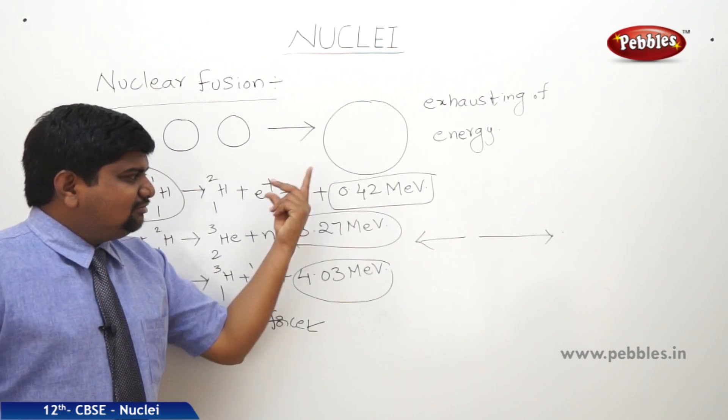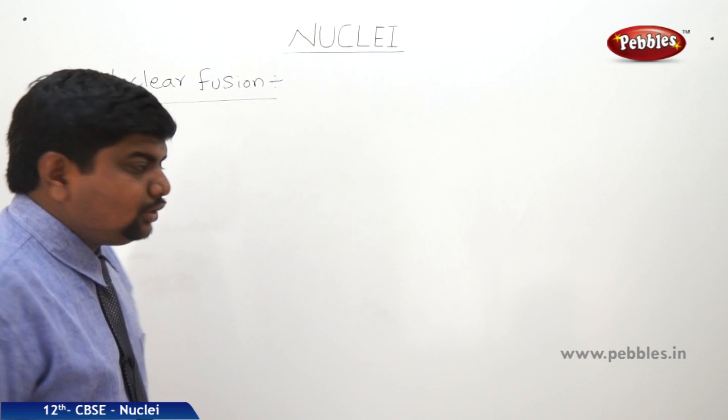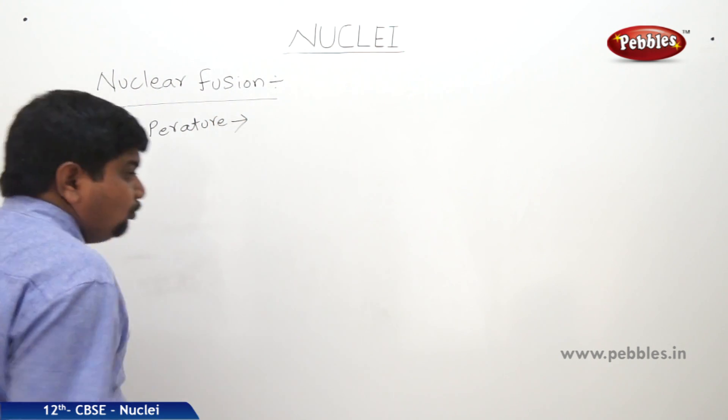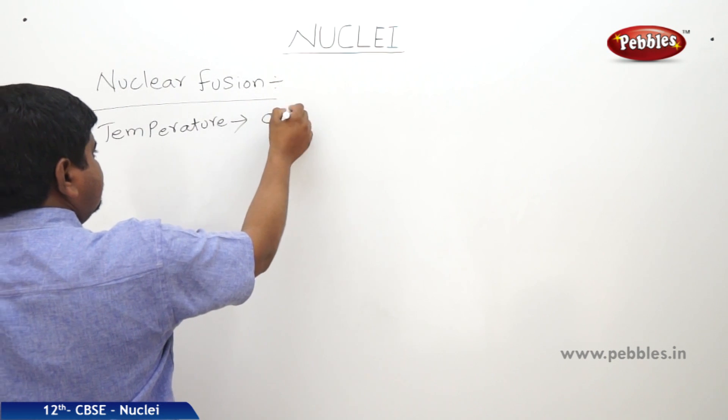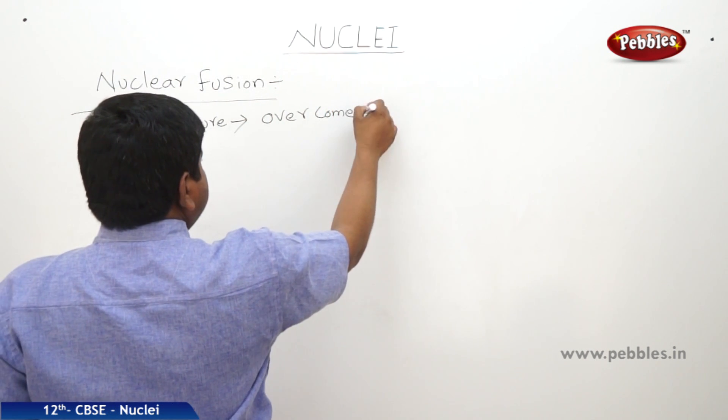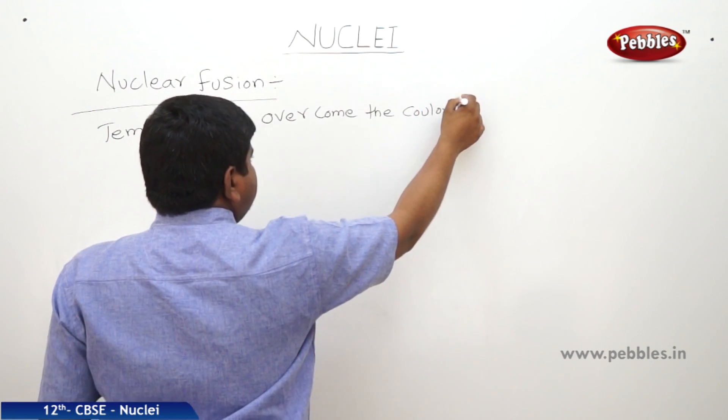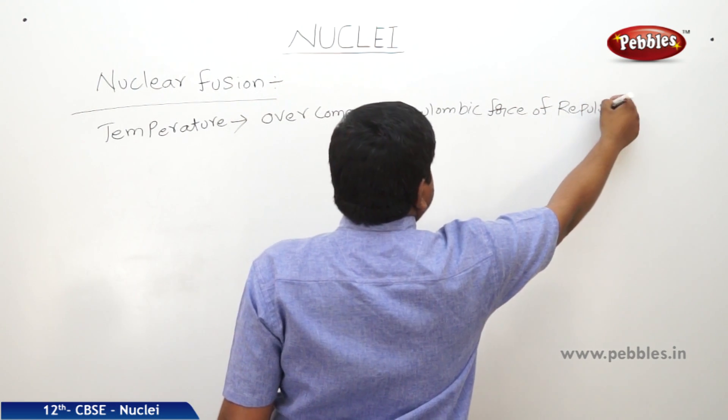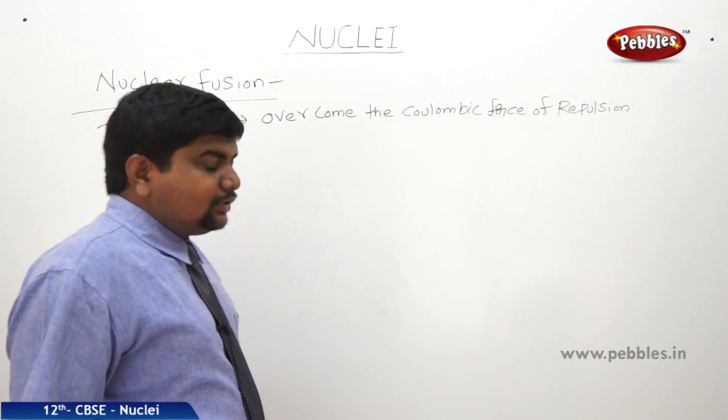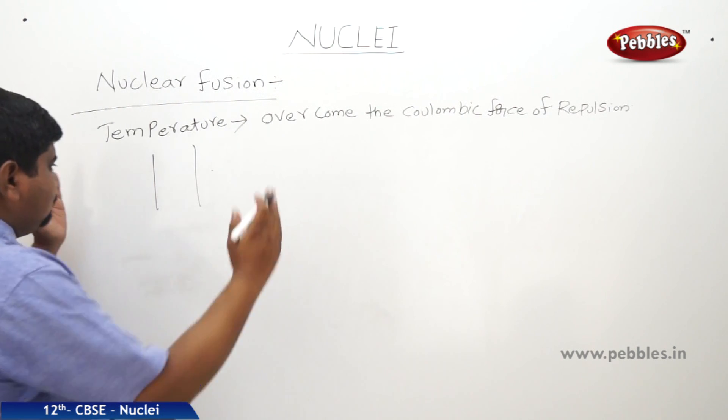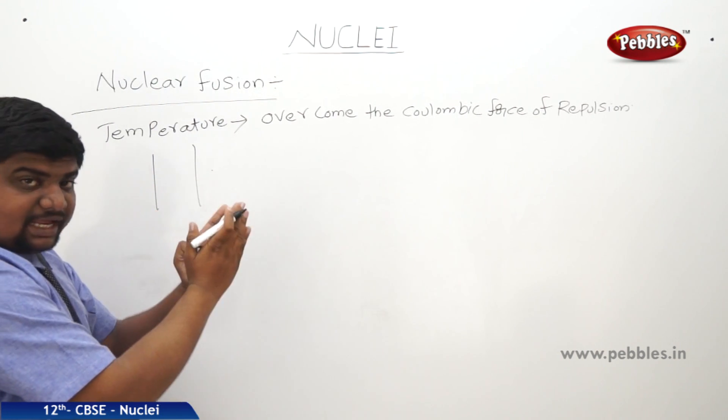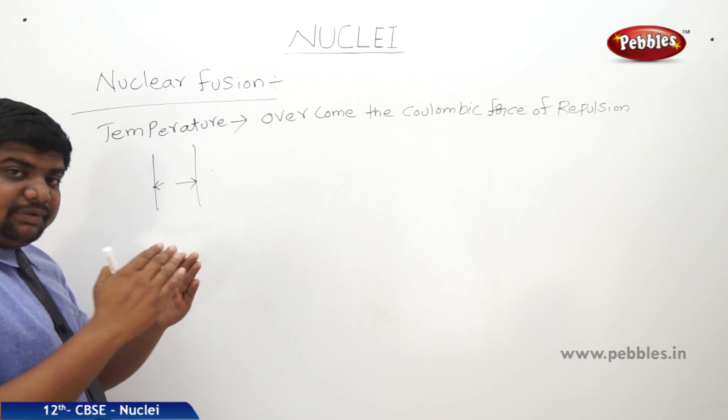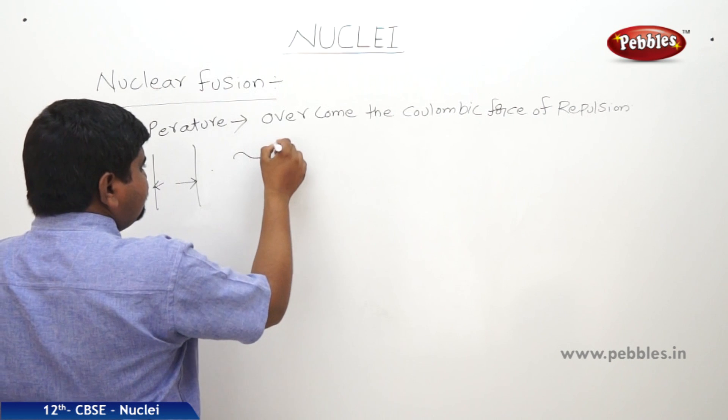How much temperature it is and what is the validity we are going to see now. The temperature, thermal temperature, helps to overcome the coulombic force of repulsion. Suppose if you take two protons, if they should participate in a reaction, actually the coulombic force of repulsion is taking place between the protons and they will be separated by such an amount of barrier. The barrier is approximately 400 KeV.